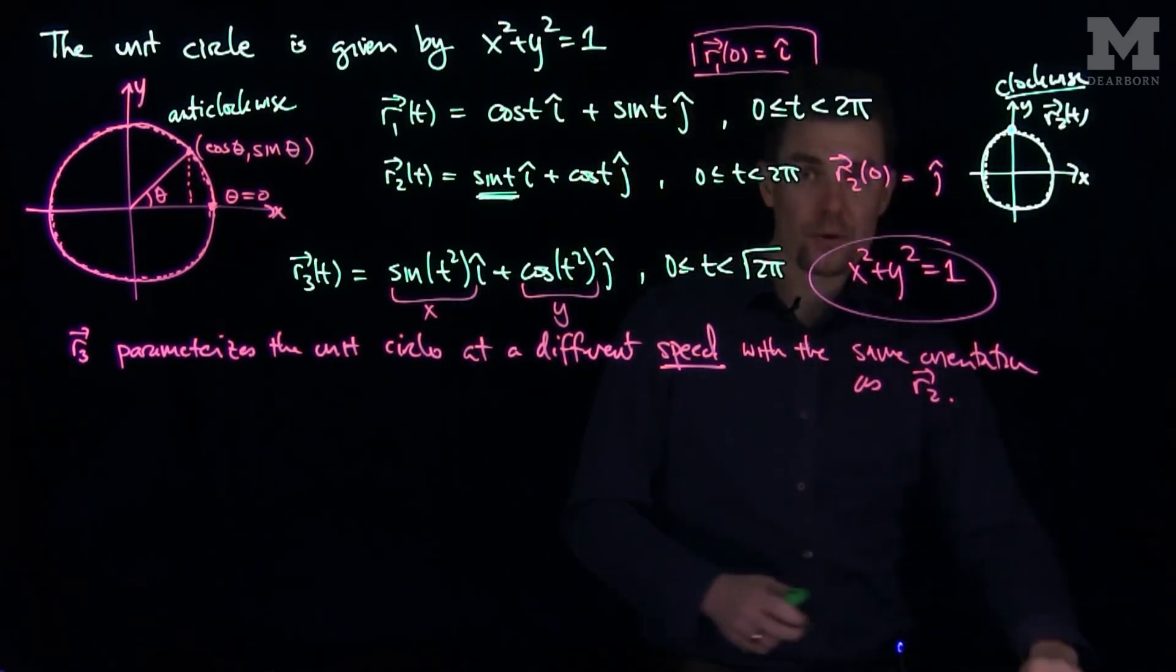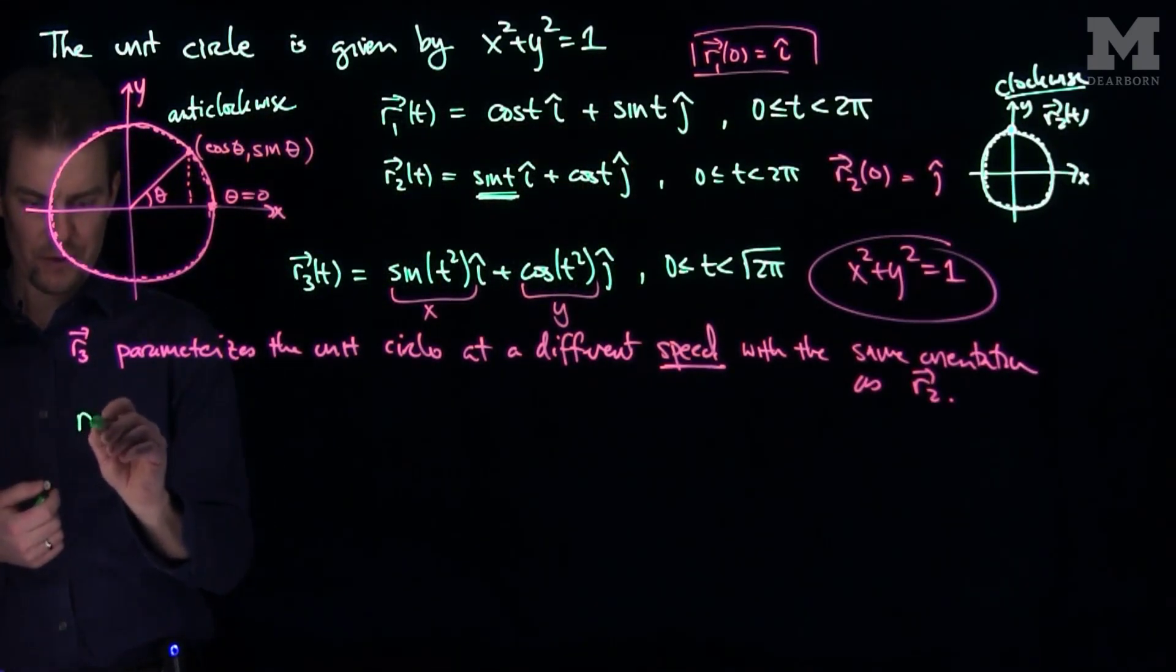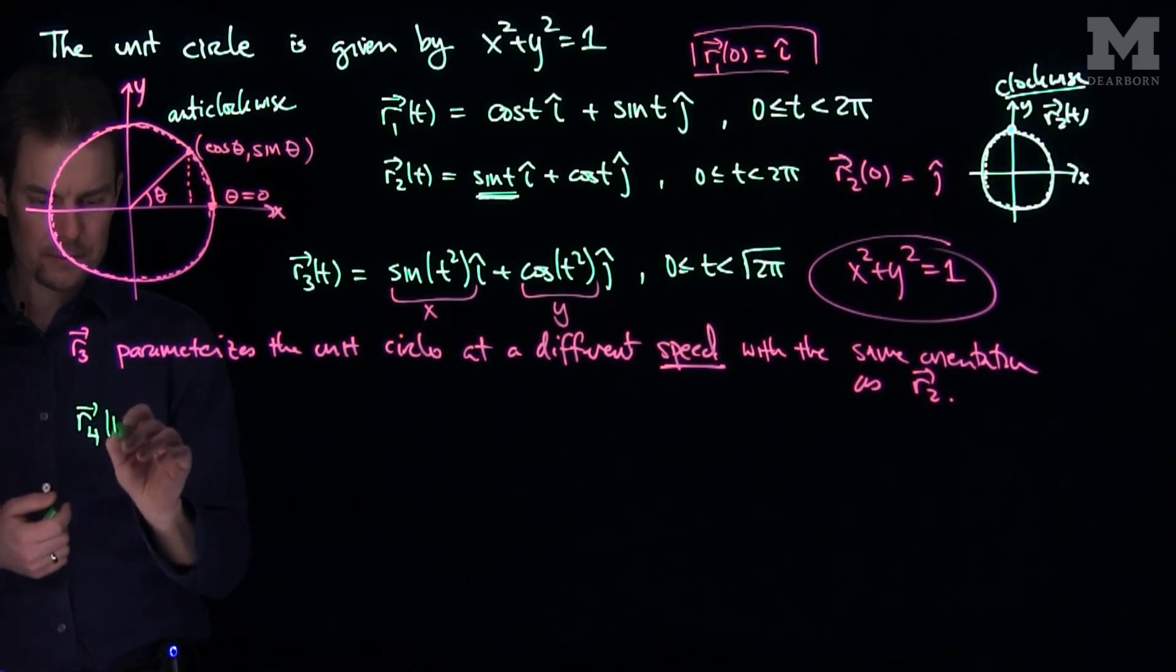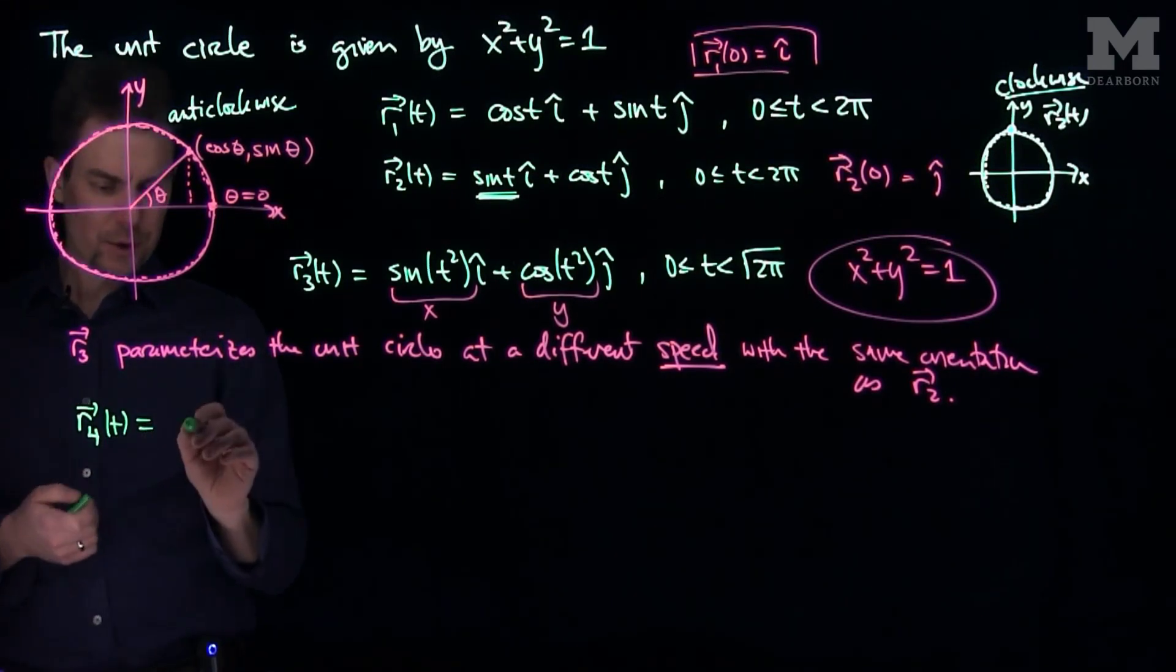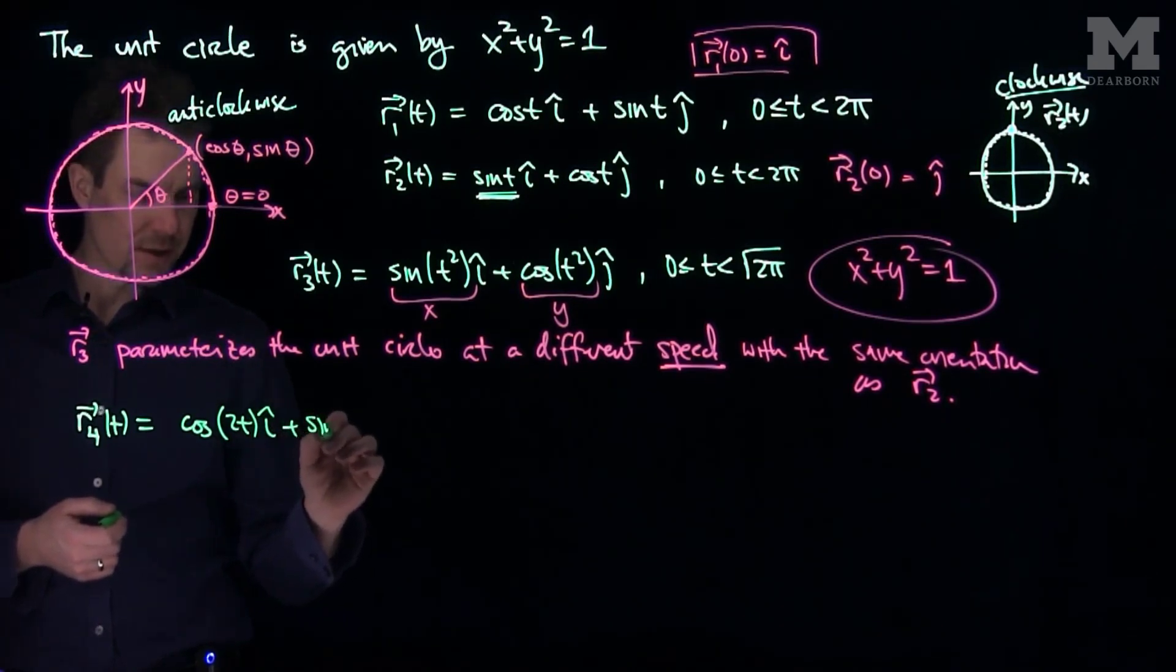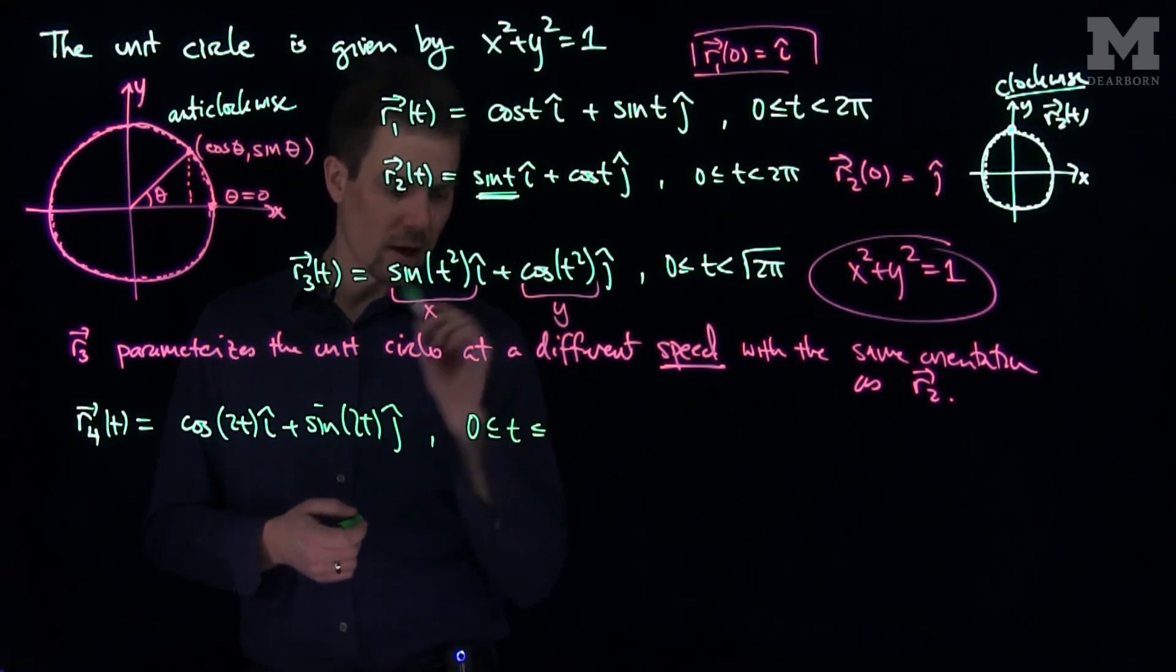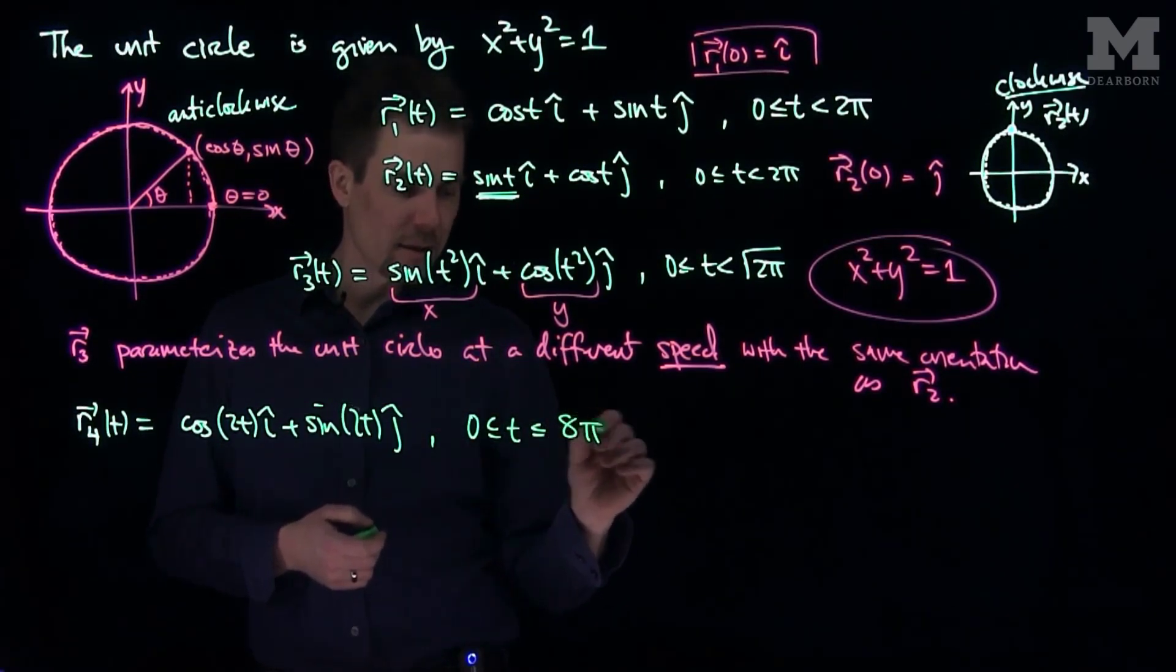So curves can have different orientations, they can have different speeds, and they can also cover themselves multiple times. If I look at this curve over here, r4(t) is equal to the cos(2t) i hat plus the sin(2t) j hat, where now t goes between zero and, let's say, 8π.